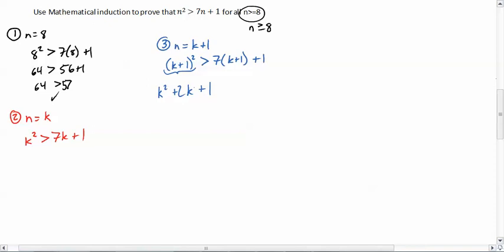Alright, so what I'm going to do now is what we did in the last video, which is I'm going to take this k squared and replace it with the 7k plus 1. Because I've already assumed that k squared is bigger than 7k plus 1. So, if I put 7k plus 1 in for k squared, that must mean that the left hand side, k squared plus 2k plus 1, is bigger than 7k plus 1 plus 2k plus 1. Alright, so I've put this right here in for the k squared.